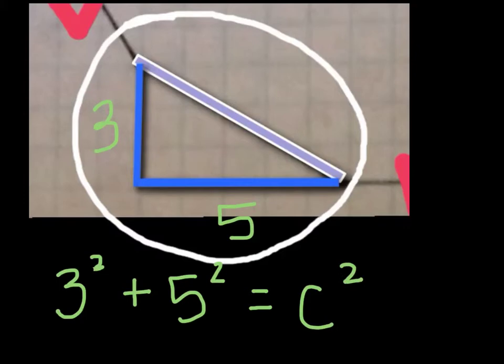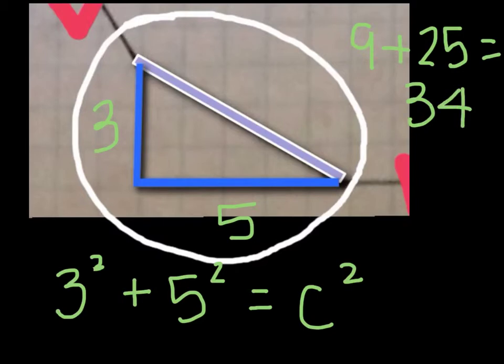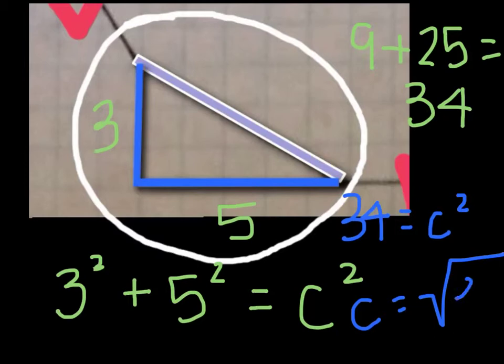So 3 squared — 3 times 3 is 9 — plus 5 squared — 5 times 5 is 25 — equals 34. So 34 equals c squared, and c itself equals the square root of 34, which cannot be simplified any further.